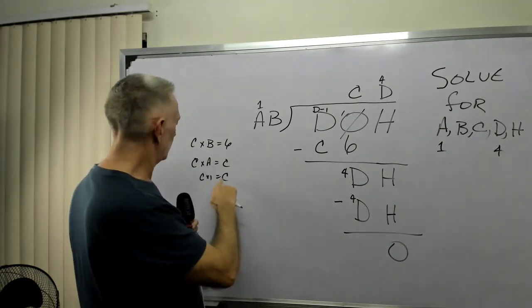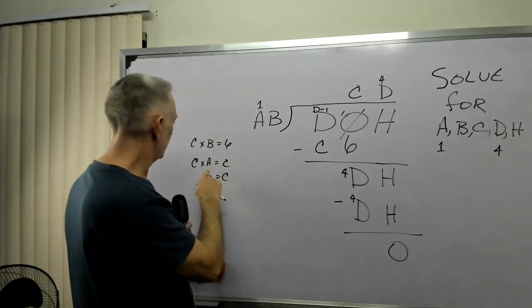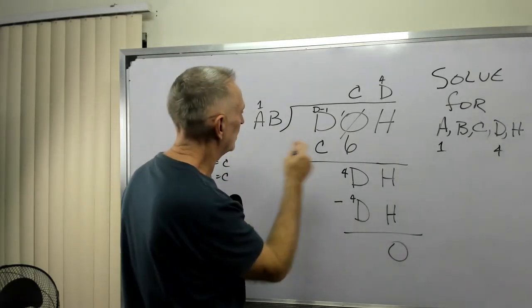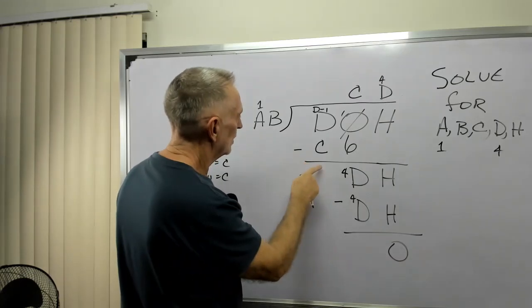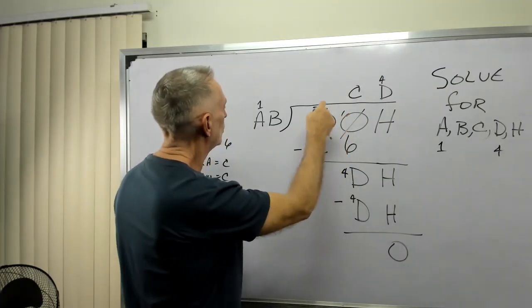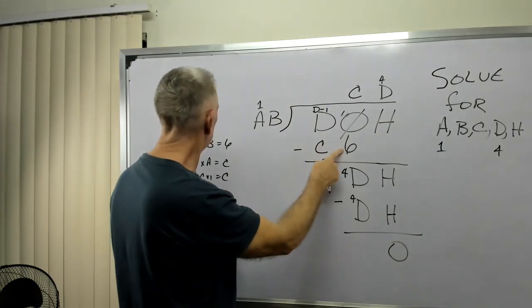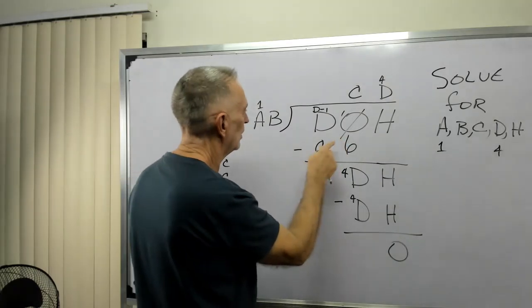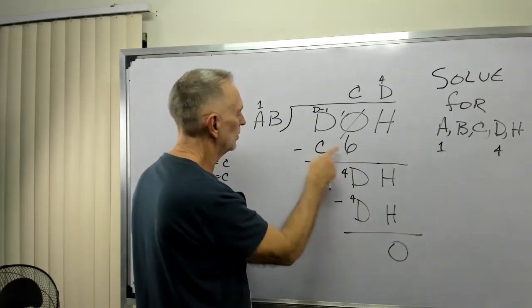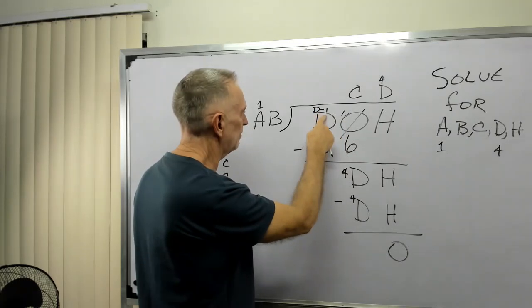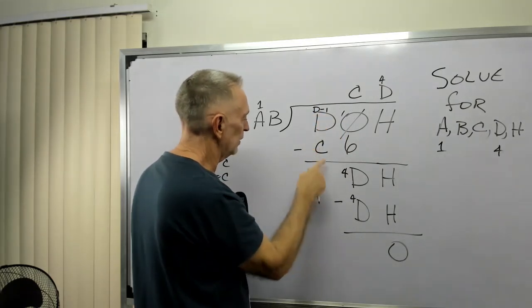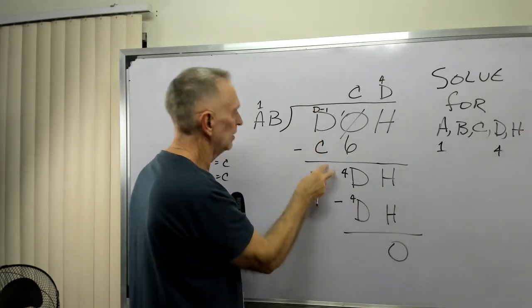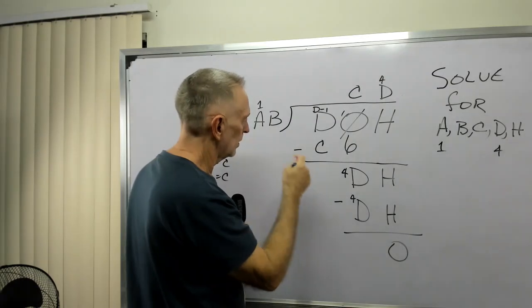C times B is 6. C times A is C, so A is 1. D has to be 4 because we borrowed a 1. We have a D minus 1 minus C equals 0. So D minus 1 equals C. So D must be 4.